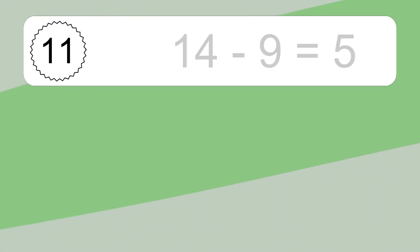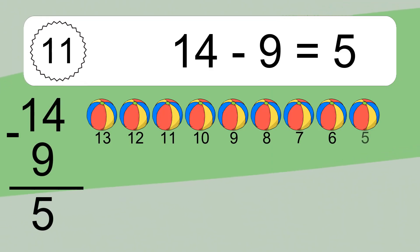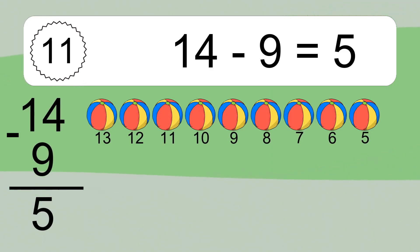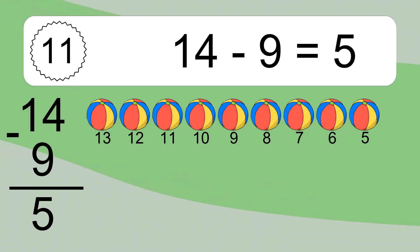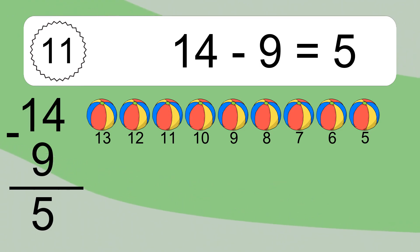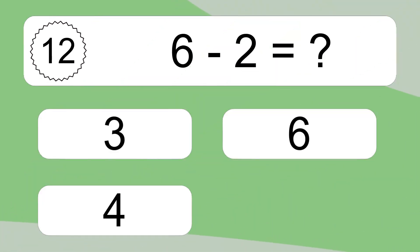14 minus 9 equals what? 9 minus 1 equals 5. Let's count it: 13, 12, 11, 10, 9, 8, 7, 6, 5.